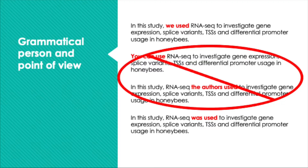So which ones are the most common in scientific writing? If you said the first and the last, I agree. I would recommend against using second person, third person referring to the agent by name, and also against referring to yourself in the third person. Most of the time you're going to use either the structure of the first sentence — 'we used' — or the fourth sentence — passive without an agent.